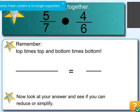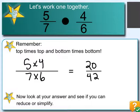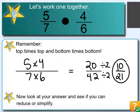Let's try another one: 5 sevenths times 4 sixths. We go ahead and multiply 5 times 4 and 7 times 6, so we have 20 over 42. We look and say, is this in simplest form? No, it's not, because we can divide each of these by 2 and get 10 over 21. That would be the final answer.